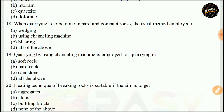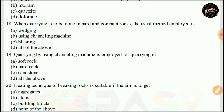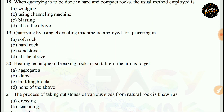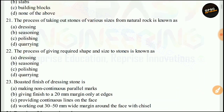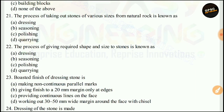When quarrying is to be done in hard and compact rock, the usual method employed is blasting. The right answer is C. Quarrying by using a channeling machine is employed for soft rock. The right answer is D. The technique of breaking by groove is suitable when the aim is to get aggregate. The right answer is A. The process of taking out stones of various sizes from natural rock is known as quarrying. The right answer is D.